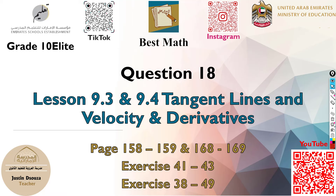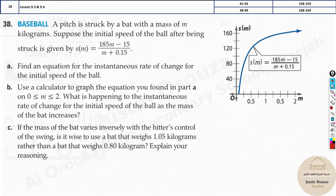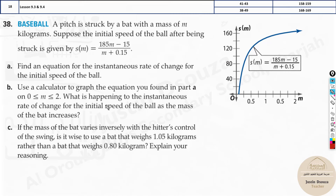We move on to question 18, about tangent lines, velocity, and derivatives. Here we have a real-world problem: a pitch is struck by a bat with mass m kilograms. The initial speed of the ball after being struck is given by speed as a function of mass: S(m) = (185m - 15) / (m + 0.15). The bat weight matters because as the weight increases, the speed plateaus after a certain level, but varies for lower values. They ask us to find an equation for the instantaneous rate of change for the initial speed of the ball.